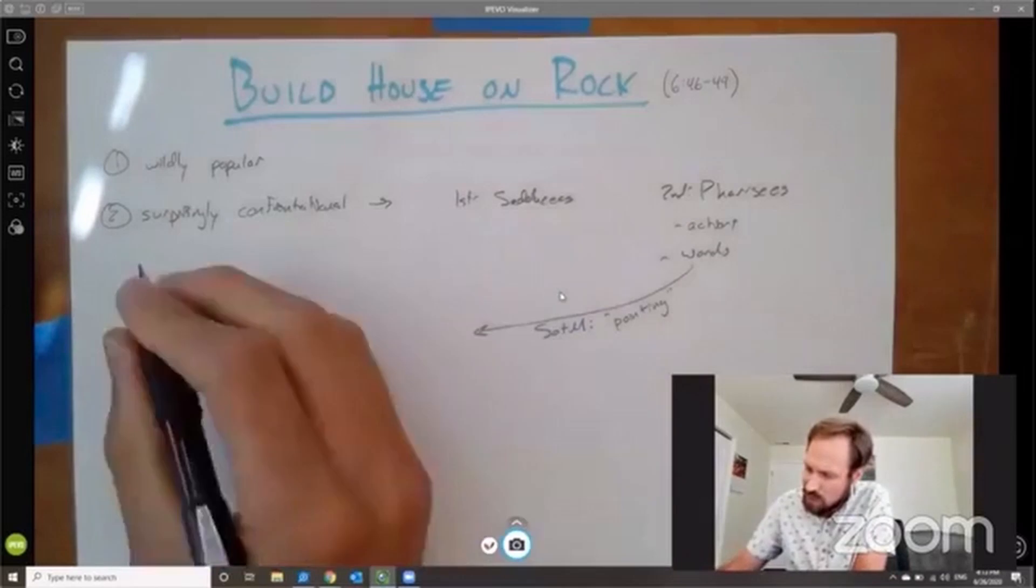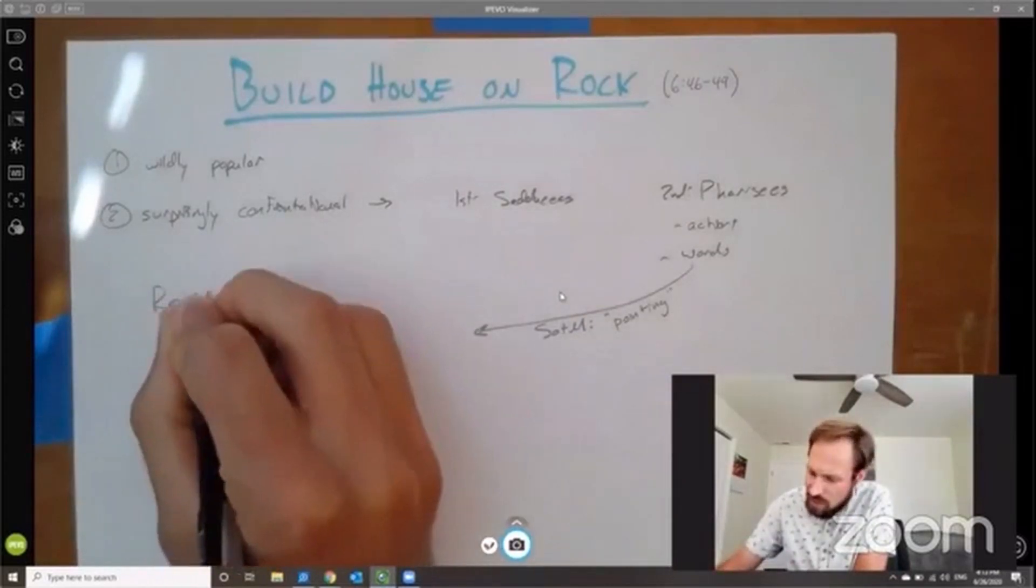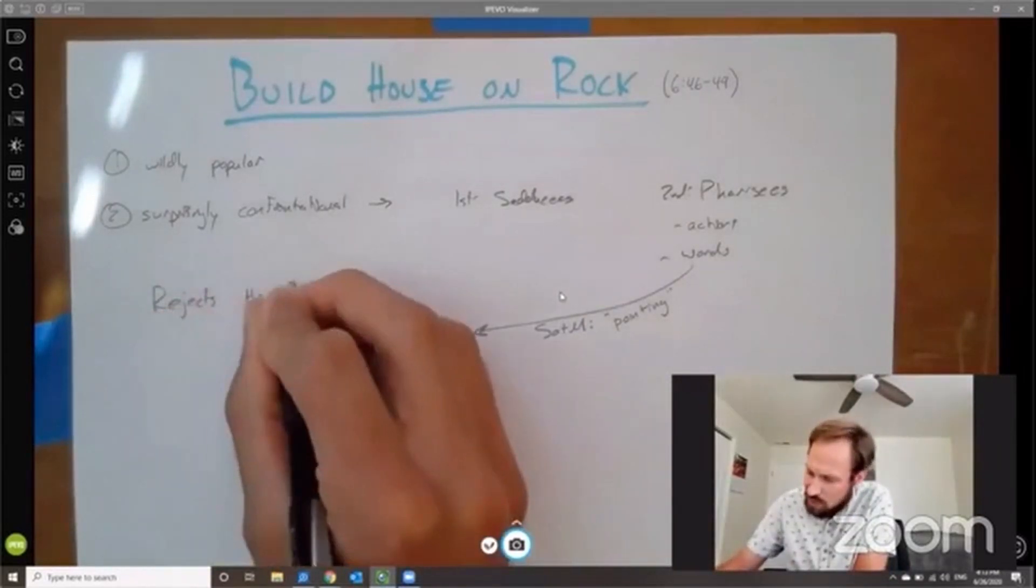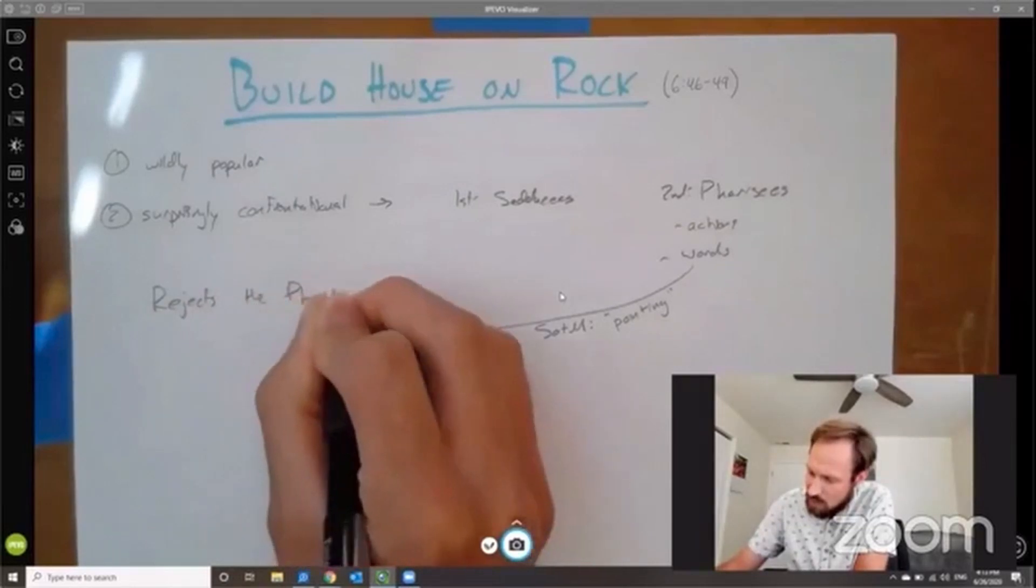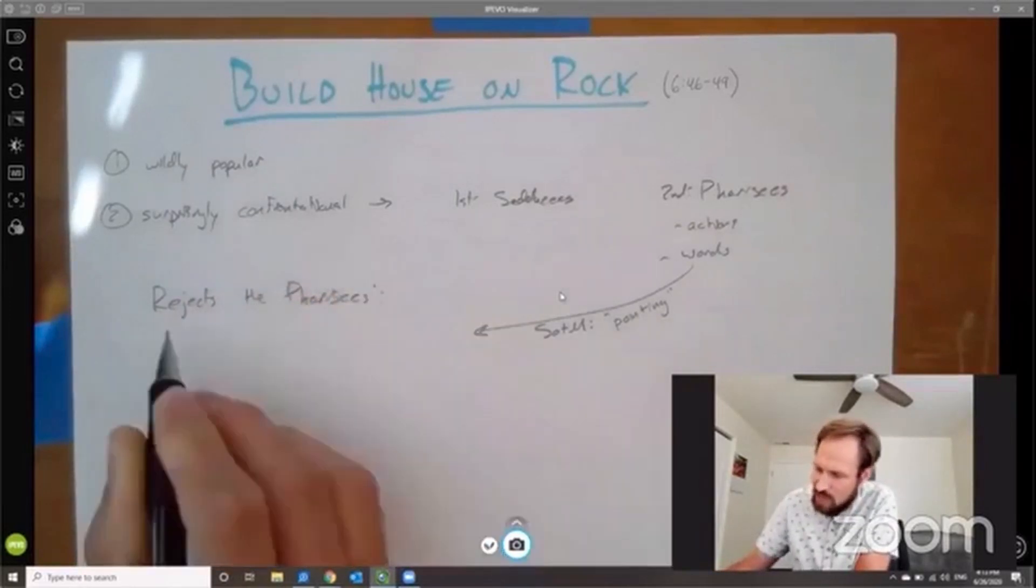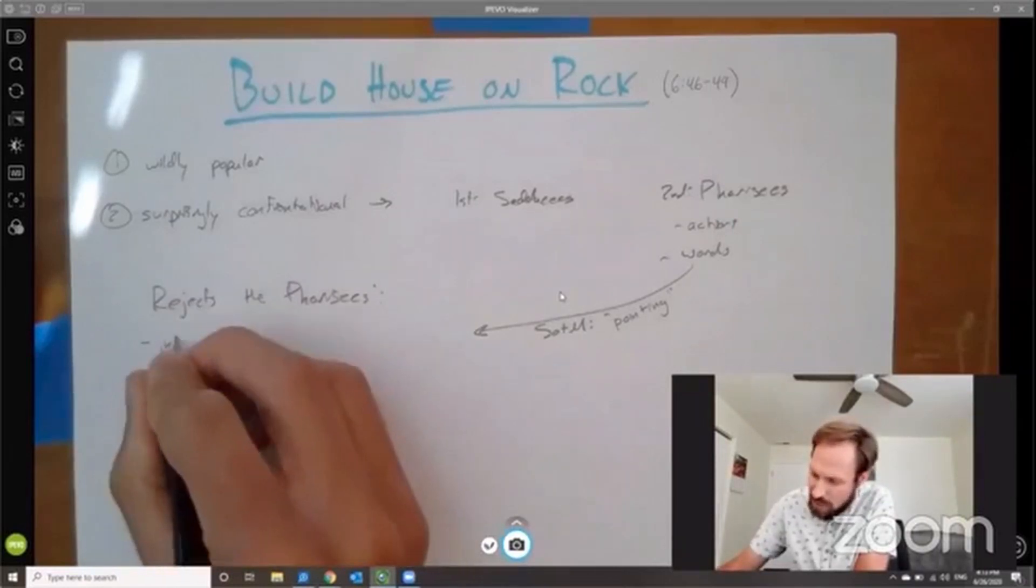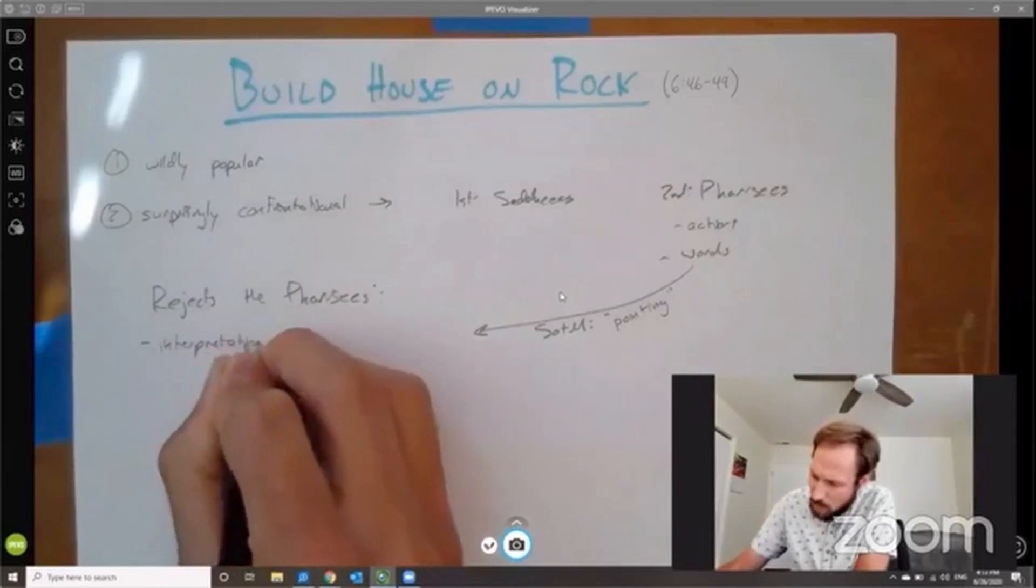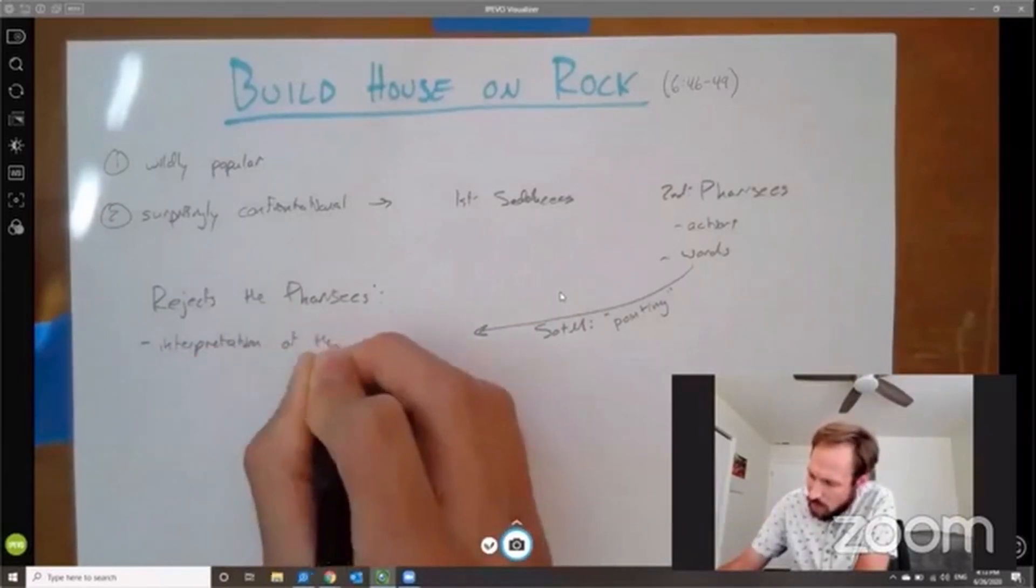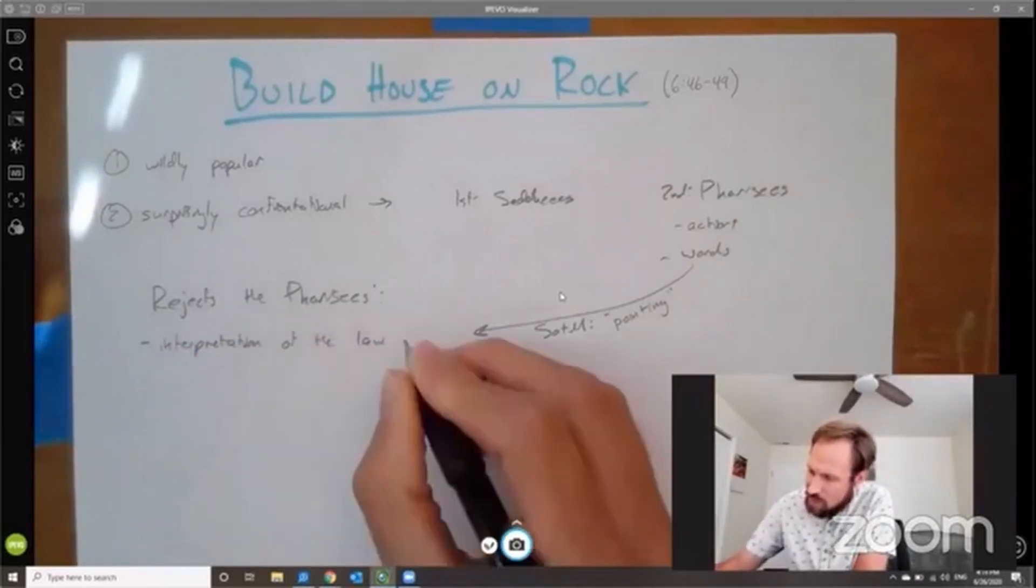So take a look at this. So what does Jesus do in the Sermon on the Mount? He rejects the Pharisees. A couple things. He rejects the Pharisees. One, he's going to reject their interpretation of the law.